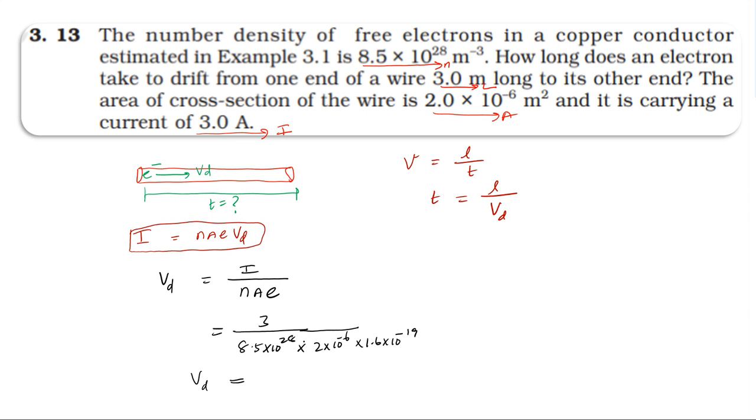Simplifying, the drift velocity is approximately 1.10 into 10 power minus 4 meters per second.